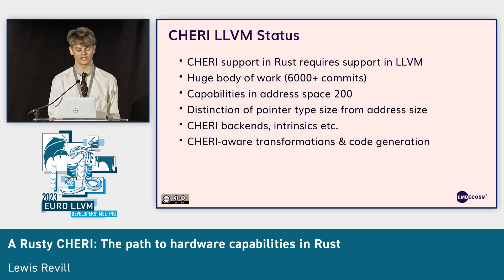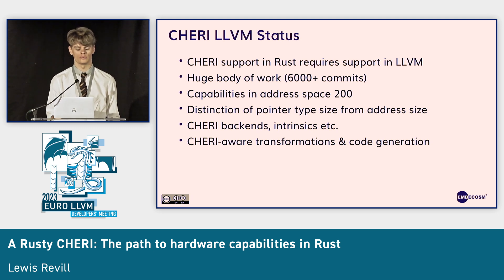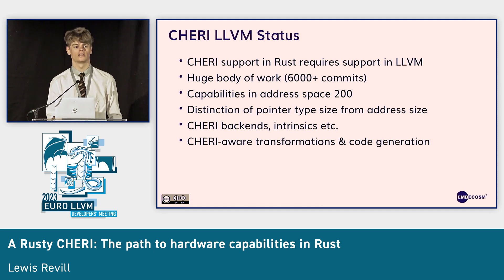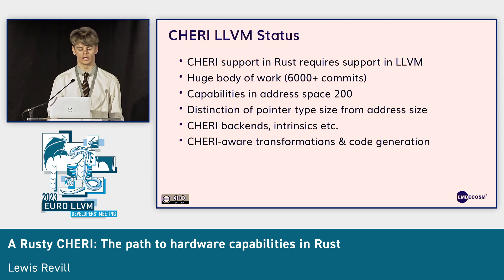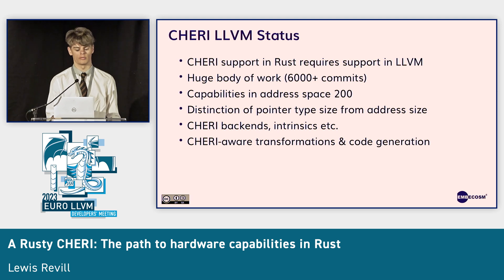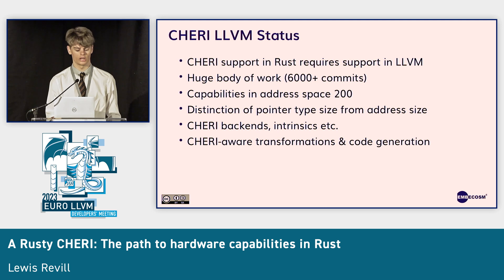Since this is an LLVM conference, let's talk about what changes are required in LLVM to overcome these challenges. For our work in Rust to be successful, we need CHERI support in LLVM, and luckily this work has been going on for many years. It's a huge body of work with over 6,000 commits, covering the introduction of capabilities as pointers in address space 200, the distinction of the type size from the size of the address you can represent in pointers for capabilities, several CHERI backends with code generation for CHERI intrinsics, and a large amount of work making transformations CHERI-aware and code generation correct for CHERI.